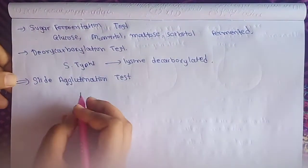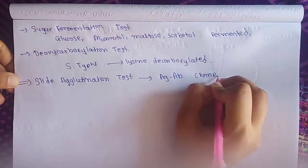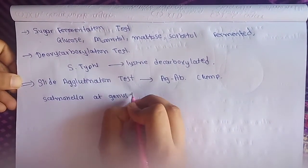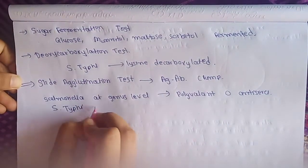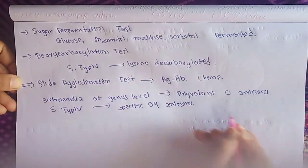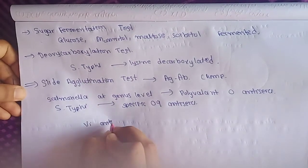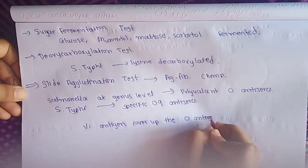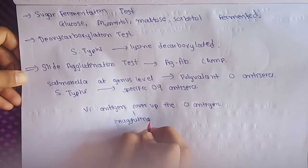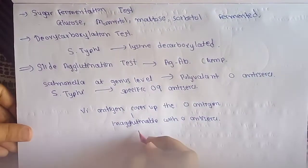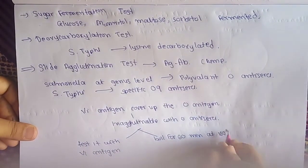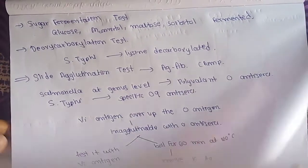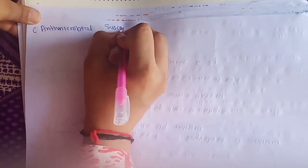In the slide agglutination test, antigen-antibody clump formation is observed. At genus level, Salmonella is agglutinable by polyvalent O antigen; for Salmonella typhi specifically, we use O9 antiserum. However, the Vi antigen covers the O antigen, making S. typhi inagglutinable with O antiserum. To resolve this, test with Vi antigen or boil at 100°C for 60 minutes to remove the Vi antigen.